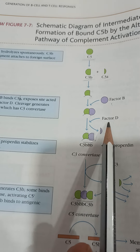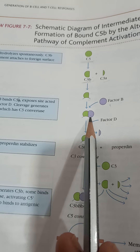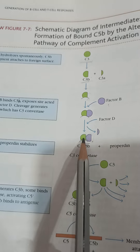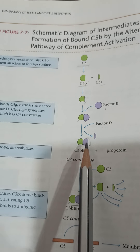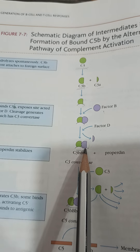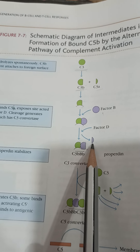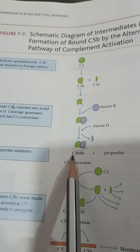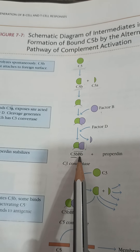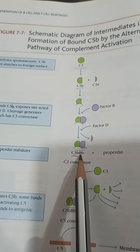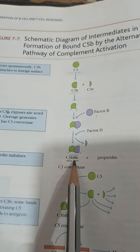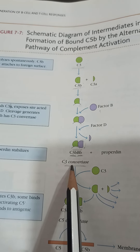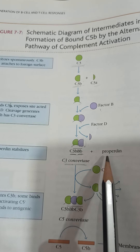After Factor B joins C3b, Factor D cleaves Factor B into a smaller fragment and a larger fragment. The larger fragment of Factor B remains attached, and the smaller fragment diffuses away. The larger fragment of C3b — that is C3b — together with the larger fragment of Factor B, called Bb, is now called C3 convertase.